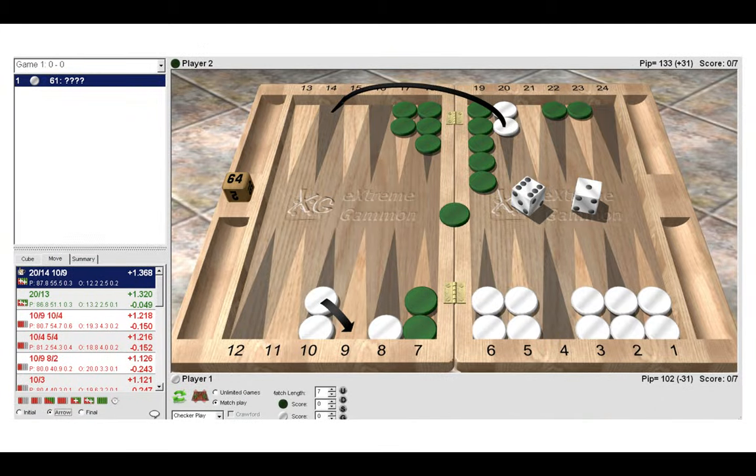The right move here is to play 20-14, coming off the anchor, and then splitting the checkers 10-9. The first thing before we make any checker play is that we scan the four quadrants of the board. By doing that we notice that green's front position is very vulnerable—he has two checkers exposed in his home board, two blots. That means we can take more risks and exploit the vulnerabilities in green's front position.